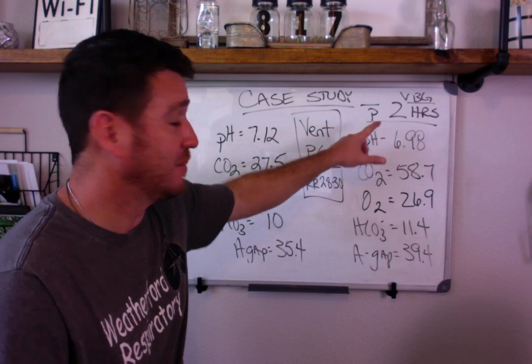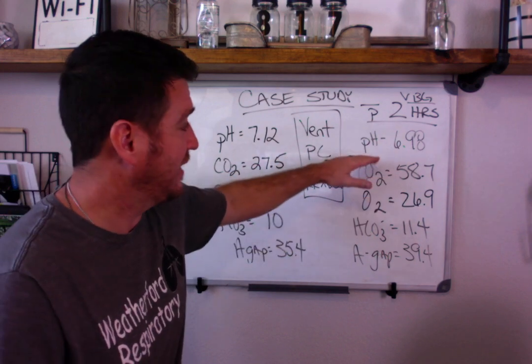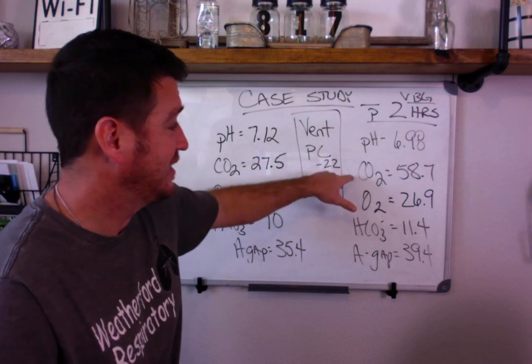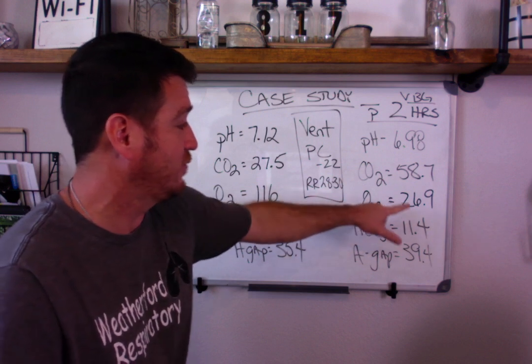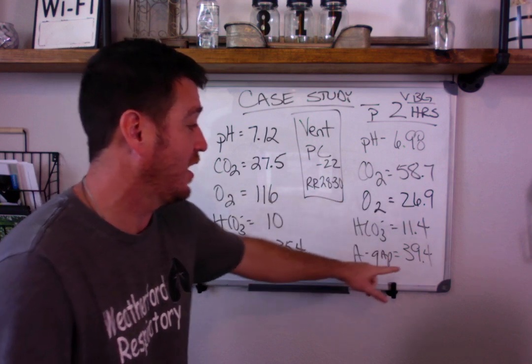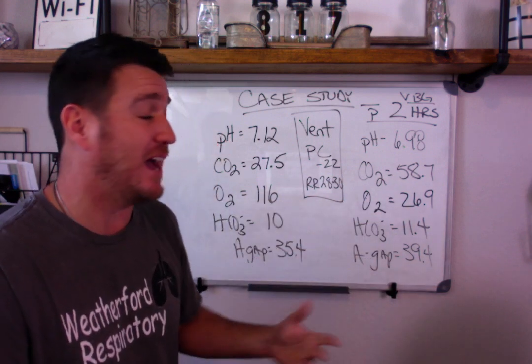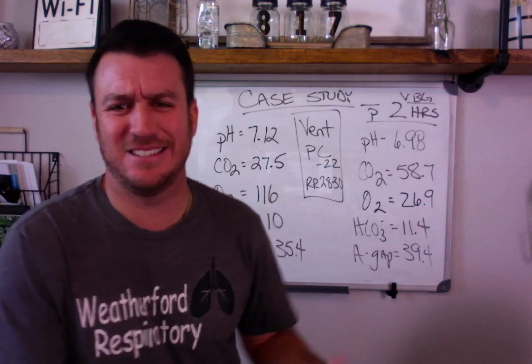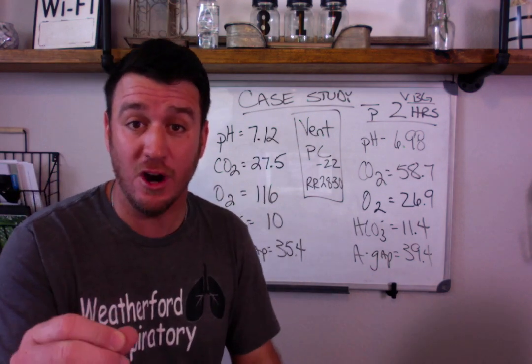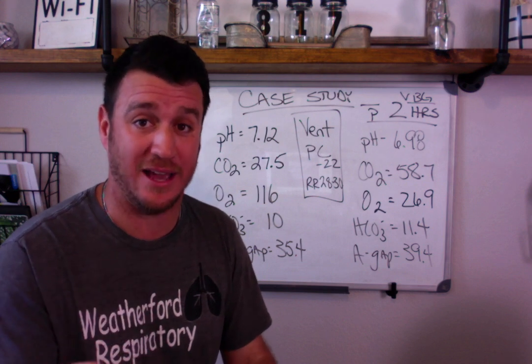Now, two hours later, there was a blood gas drawn. And the blood gas gave us 6.98, CO2 of 58.7, O2 of 26.9, bicarb of 11.4. Our anion gap is now 39.4. Now, this looks weird, right? You go, wait a second, what's going on here? Well, it's important to note that this is a venous blood gas.